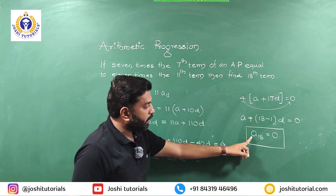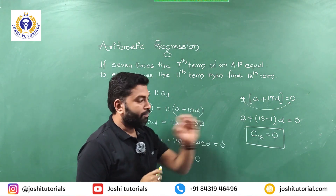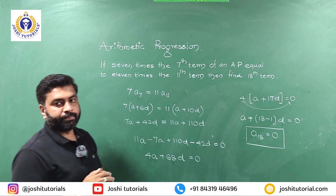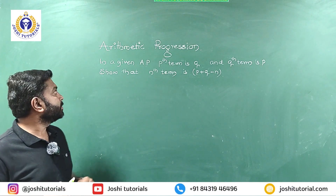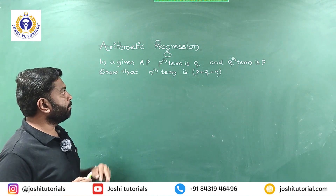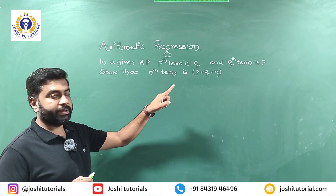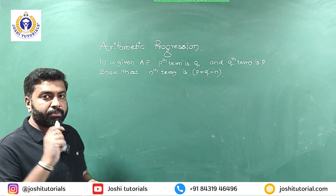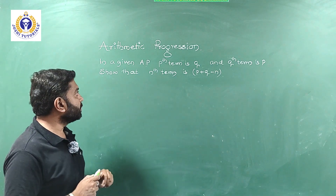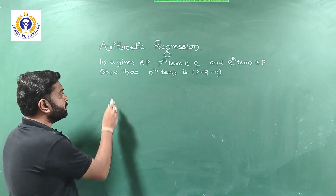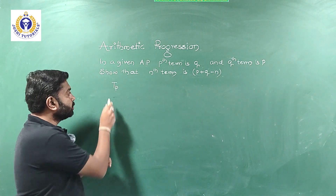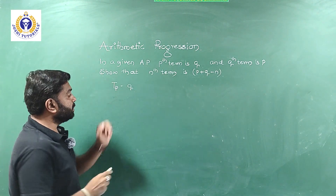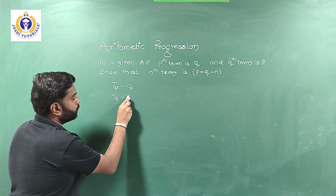Therefore the 18th term of the AP is 0. A very beautiful and simple question — try to note it down. Next question: In a given AP, the pth term is q and the qth term is p. Show that the nth term is p + q − n. This is a very important question from the examination point of view. So pth term: tₚ = q, and qth term: tq = p.